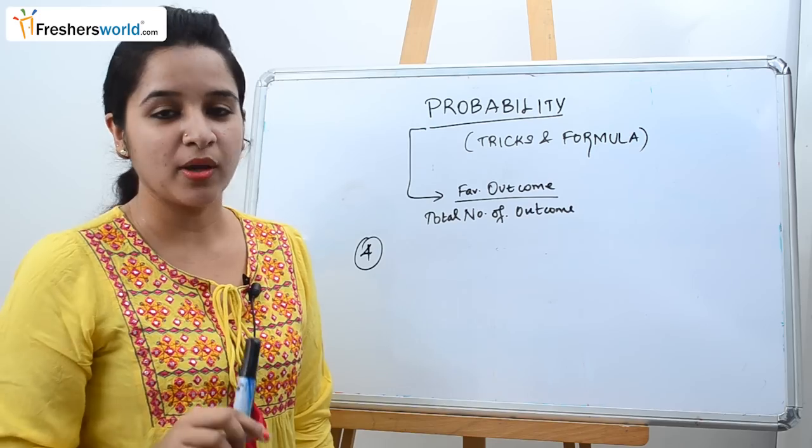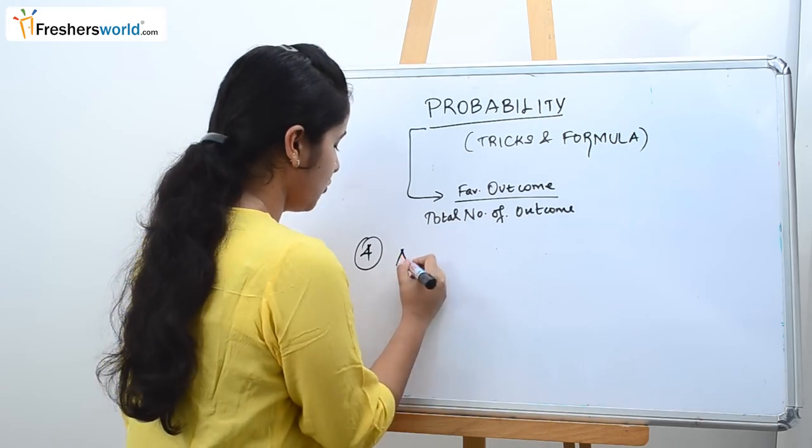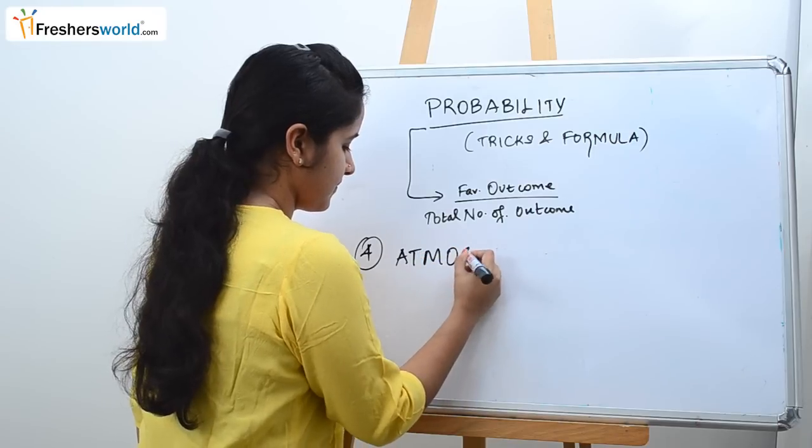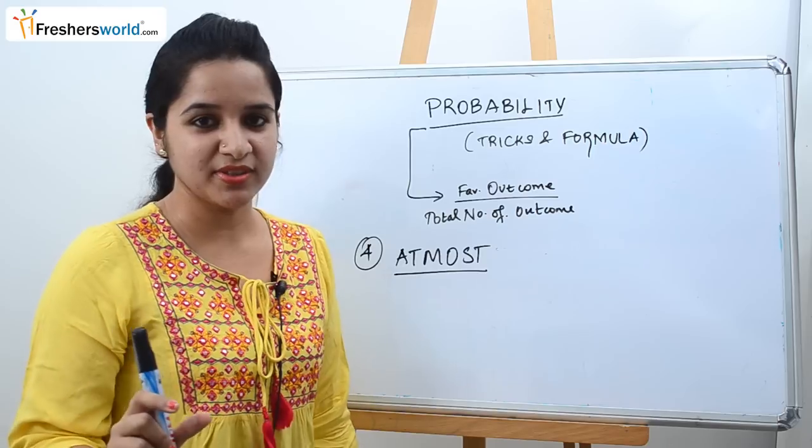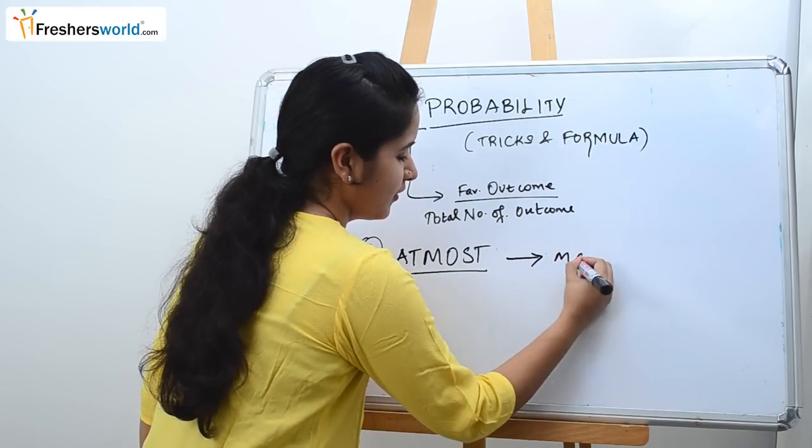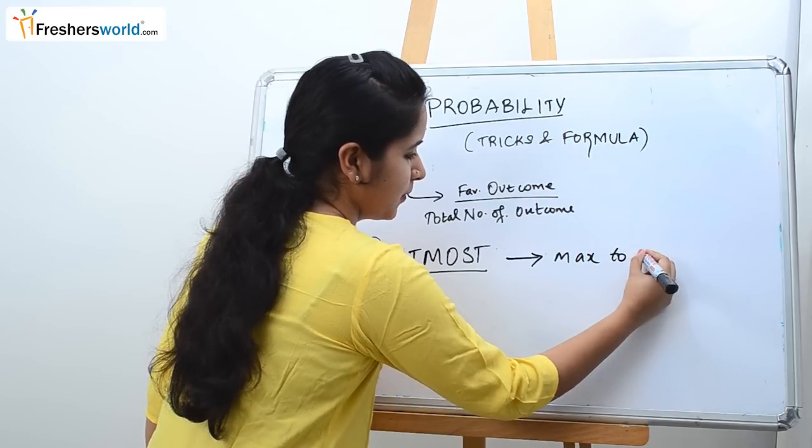So the fourth trick one must know is utmost. The word utmost itself shows that maximum. So here you go from maximum to minimum.